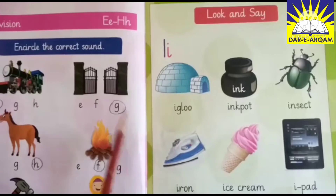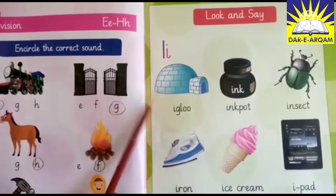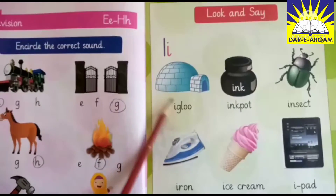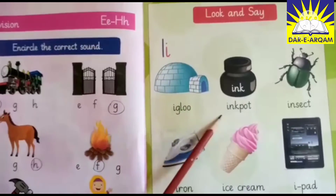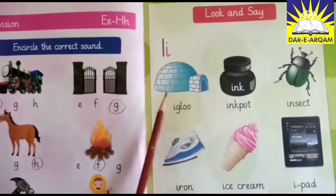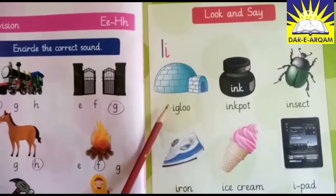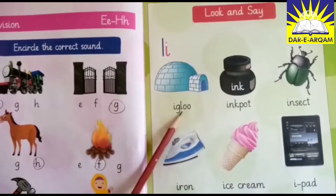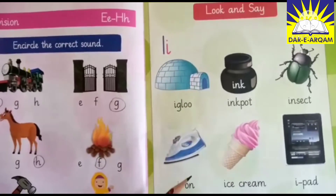Page number 12. I says E — igloo, inkpot, insects. Students, the letter I has two sounds. I says E, and I says I.